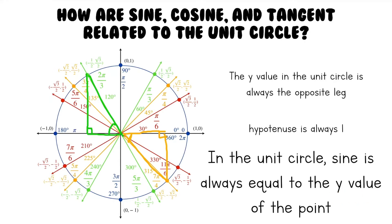So if you wanted to find the sine of 60 degrees, you would just look at the y value of this point, so that would be root 3 over 2. Or if you want to find the sine of 5 pi over 4, you would just look at the y value of this point, which is negative root 2 over 2. So the sine of 225 degrees, or 5 pi over 4, is negative root 2 over 2. It's pretty simple — all you have to do is look at the point.